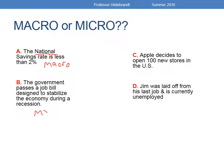Example C: Apple decides to open 100 new stores in the United States. While Apple is a very large corporation with a lot of influence, because we're only looking at one firm's action, we would consider this a micro topic. Example D: Jim was laid off from his last job and is currently unemployed. Again, we're looking at one individual, and therefore this would also be a micro topic.